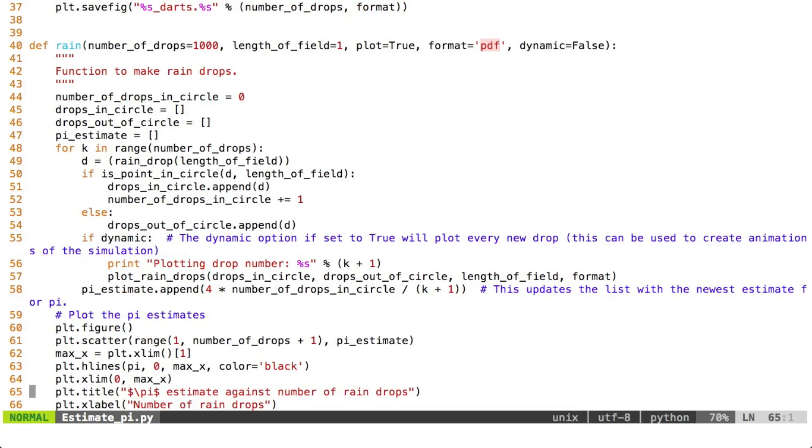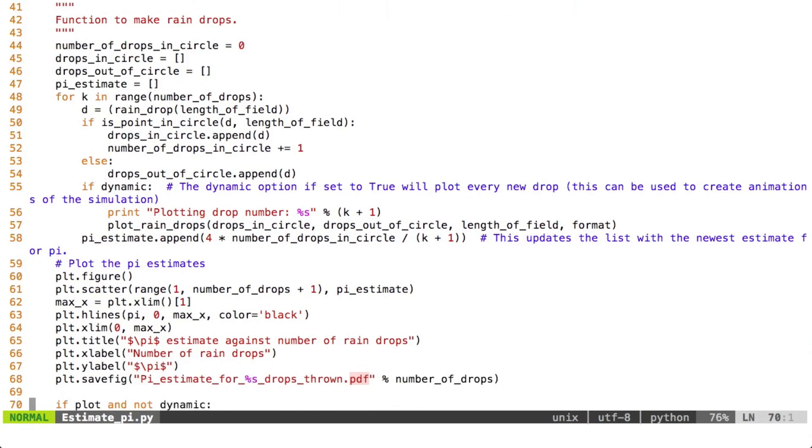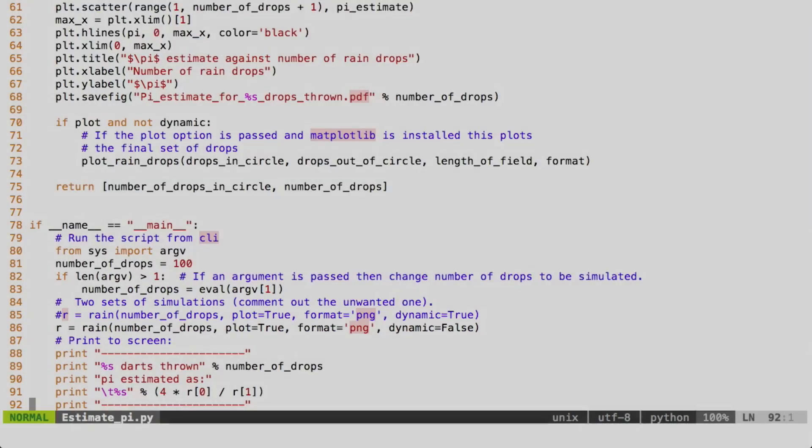This function here just is to draw the nice pictures. And then this is actually where we make it rain. And we have all the various checks in there, and then there are a few options to allow it to plot things nicely.